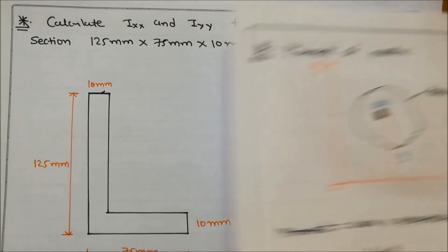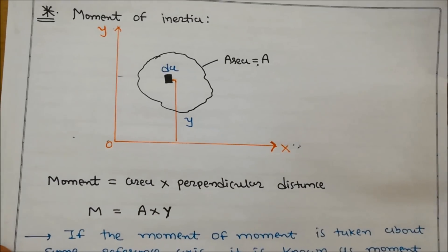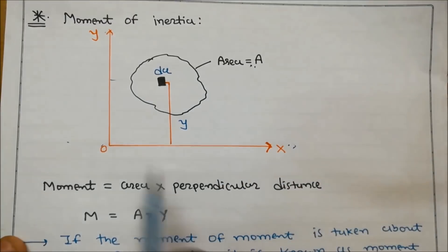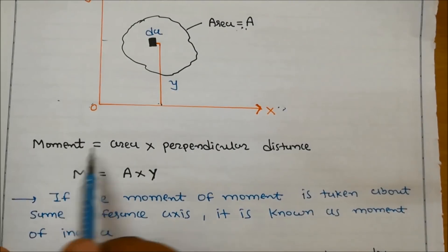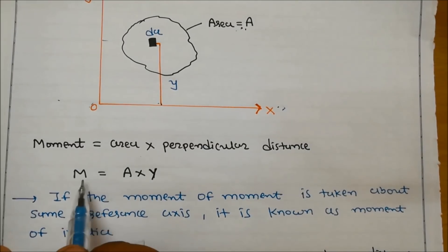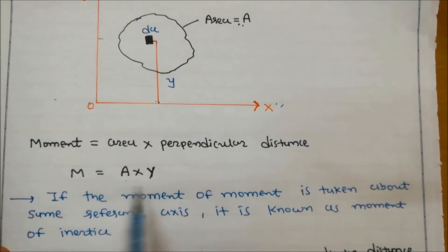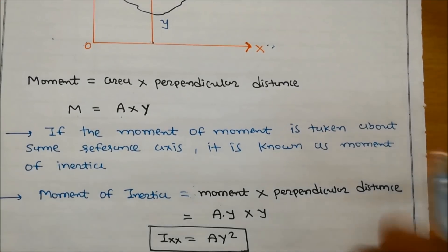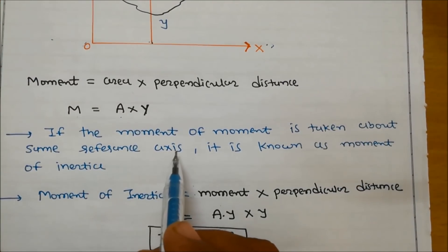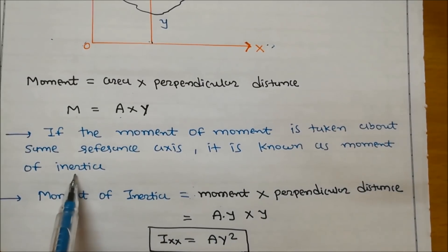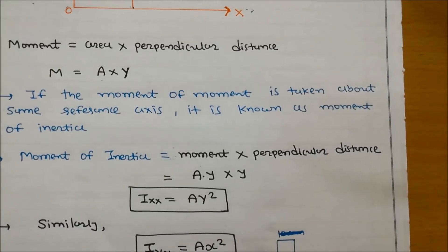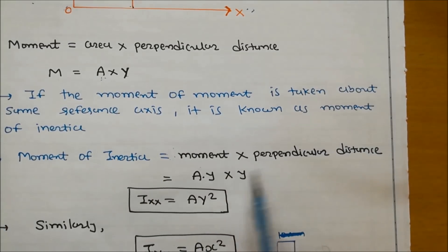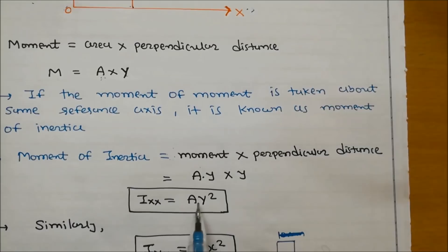So first question is: what is moment of inertia? Moment of inertia means second moment of area. We consider a lamina of area A and take the moment from the x-axis. Moment is equal to area multiplied by perpendicular distance y, so moment equals A times y. If the moment of the moment is taken about the same reference axis — that is, second moment of area — it is known as moment of inertia. So moment of inertia equals moment multiplied by perpendicular distance: A times y times y. So Ixx is equal to Ay square.